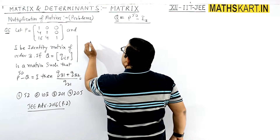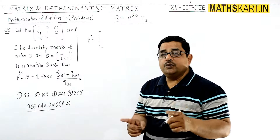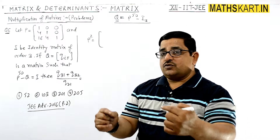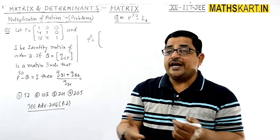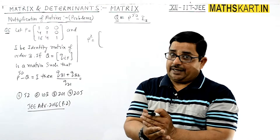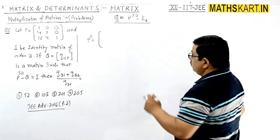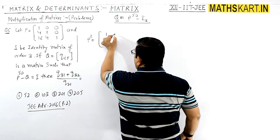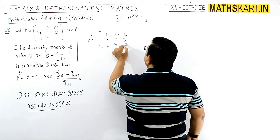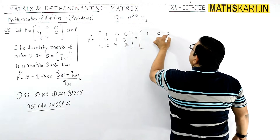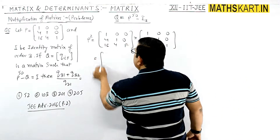To find P to the power 50, we first calculate P squared. P squared is P multiplied by P: [1 0 0 / 4 1 0 / 16 4 1] into the same matrix. Let's work out P squared.